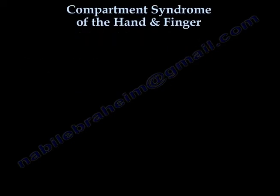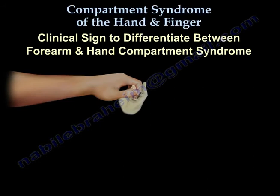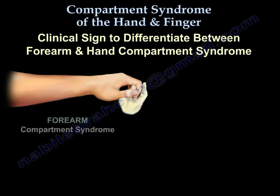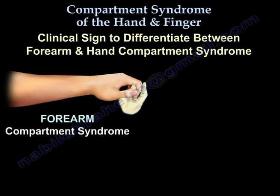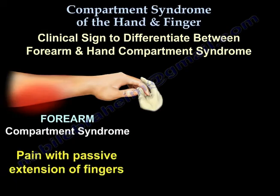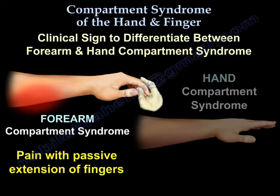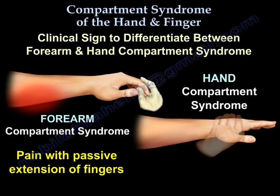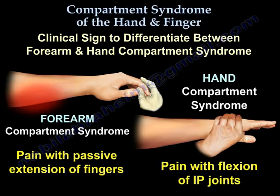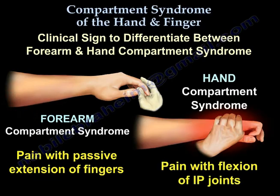Clinical sign to differentiate between forearm and hand compartment syndrome: with forearm compartment syndrome, there will be pain with passive extension of the fingers. With hand compartment syndrome, there will be pain with flexion of the IP joints.